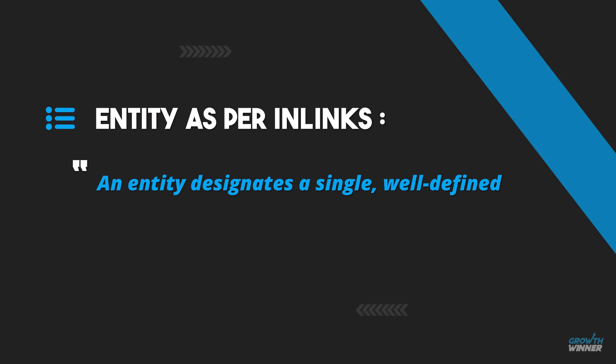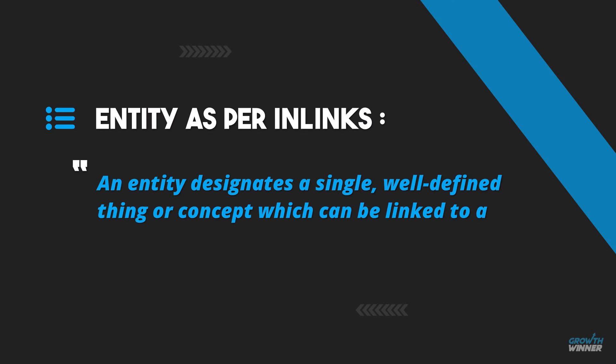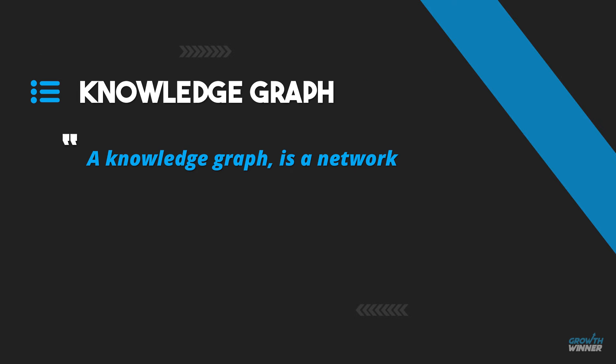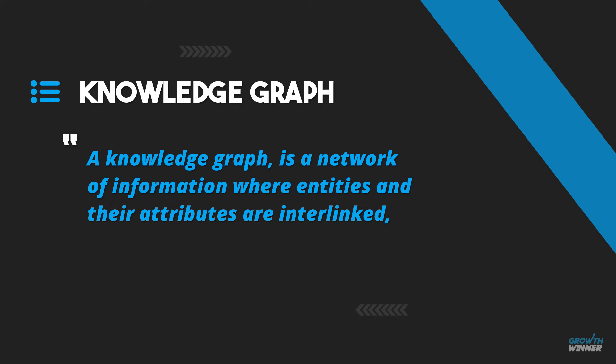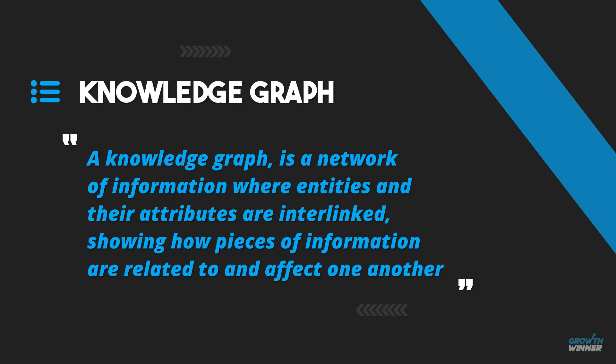As per any links, an entity designates a single, well-defined thing or concept which can be linked to a knowledge graph. A knowledge graph is a network of information where entities and their attributes are interlinked, showing how pieces of information are related to and affect one another. Unlike keywords, which are ultimately just a collection of letters specific to a language, an entity carries meaning and is independent of the language and synonyms. Which ultimately means if you are just translating content from one language to another, or even using synonyms to hide that you copied the content, Google will recognize that.